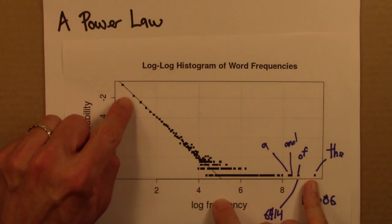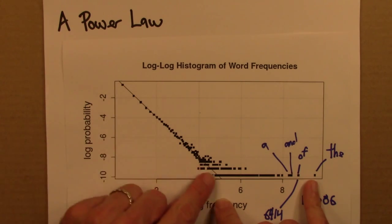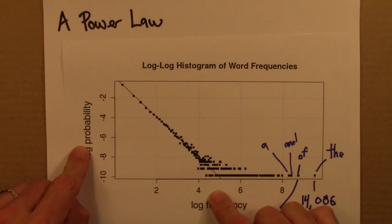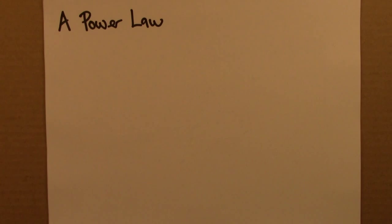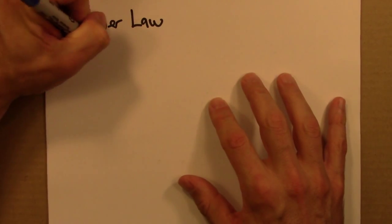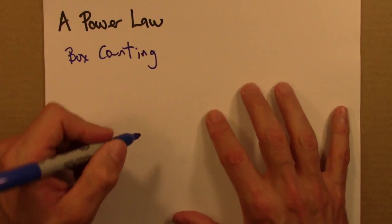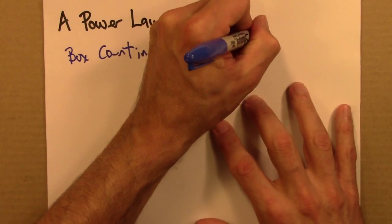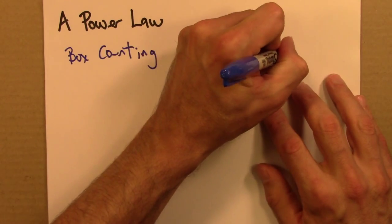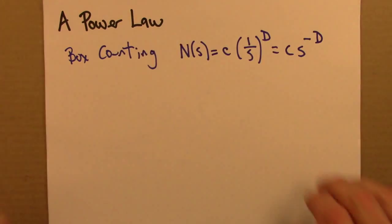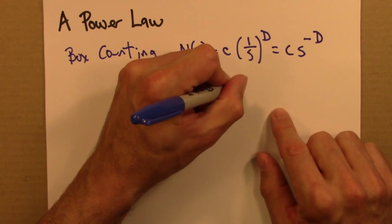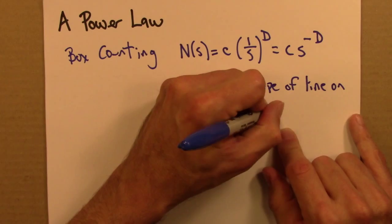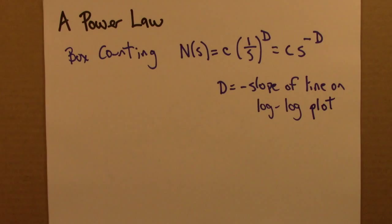Let's think about what this plot is telling us. How can we describe this set of points — the pattern we see here mathematically? I hope this sort of plot looks familiar. We saw very similar looking plots when we did box counting in the previous unit. Recall that in that setting, we were doing box counting, and we saw that N(s), the number of boxes of side s needed to cover a shape, was given by a formula, which I could also write as C times s to the minus d. And we saw that d is equal to minus the slope of the line on a log-log plot.